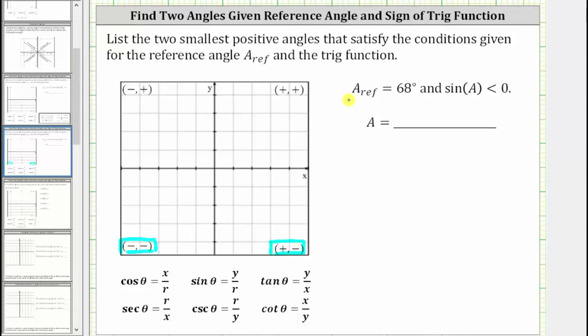And now we'll sketch the possible terminal sides of angle A in the third and fourth quadrants so that the reference angle is 68 degrees. Remember, the reference angle is the acute angle formed between the terminal side of the angle in standard position and the x-axis.